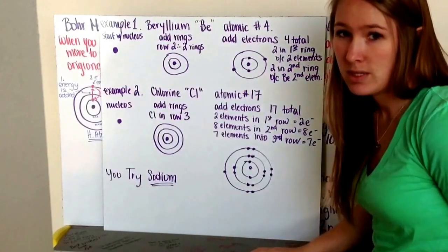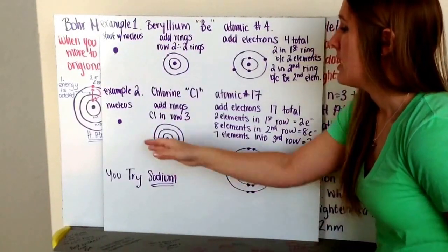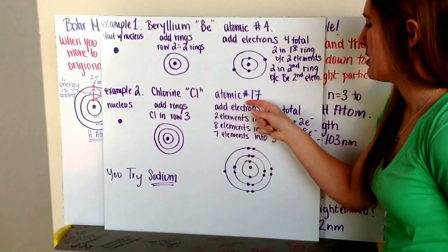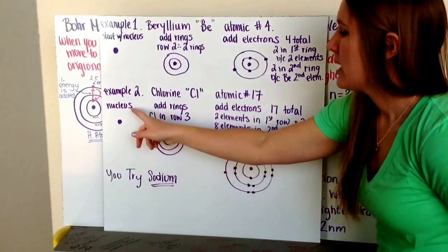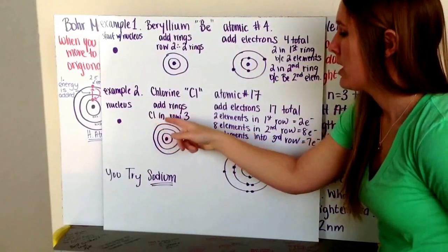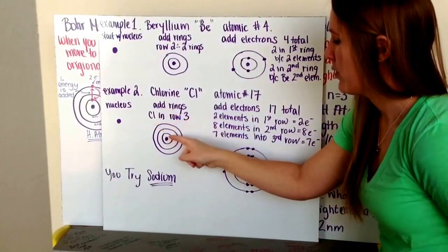Let's try one that's a little harder, or more involved. Example number two is chlorine, Cl. It's atomic number 17. We again start by drawing our nucleus, and then we add our rings. Chlorine is in row three, so I have three rings. One, two, three.